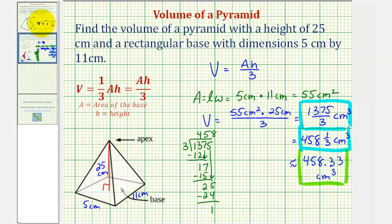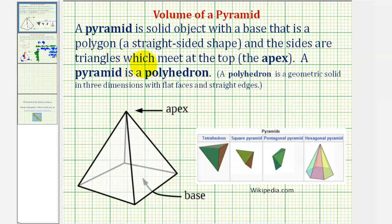But before we go, let's talk more about pyramids. A pyramid is a solid object with a base that is a polygon, meaning a straight-sided shape, and the sides are triangles which meet at the top called the apex, as we see here. Notice in this diagram, the base is either a rectangle or a square. The sides here are triangles. In this case we have four triangles, and they meet at the apex.